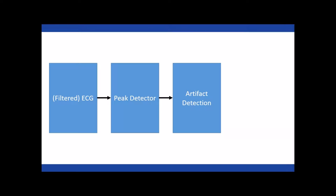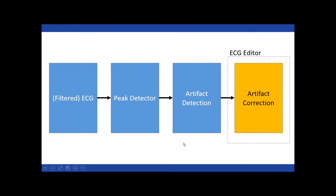In the MindWare applications, we have two artifact detection algorithms: the IBI min-max, which looks at heart rate changes above or below specified thresholds, and the MAD-MED check, which looks at variability between beats and whether it's physiologically possible for an IBI to vary by a certain amount beat to beat. We pass the peaks through these algorithms to determine which ones are correct and which need further examination, leading to our final step of artifact correction using the ECG editor.